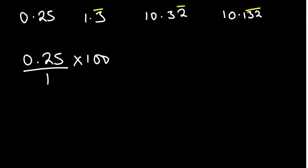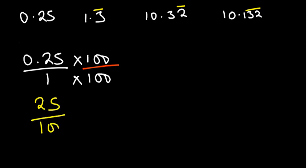Whatever you do to the numerator must also be done to the denominator. Multiplying numerator and denominator by the same number is just multiplying by 1, so you're not changing the value. You get 25 over 100. The common factor is 25: 25 divides into 100 four times, giving us 1 over 4. Dividing 1 by 4 gives 0.25, which confirms our answer.